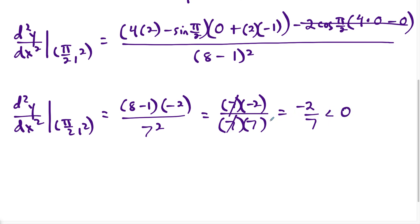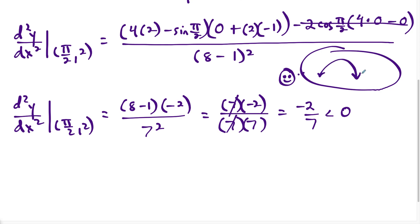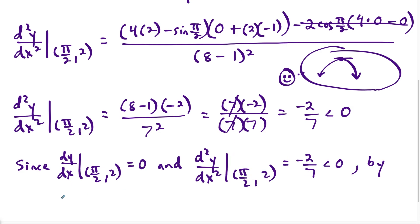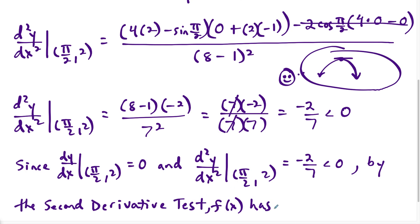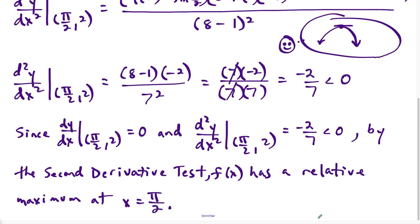Since the second derivative is negative two over seven, which is less than zero, the curve is concave down at this point. When you have a critical point where the curve is concave down, it's a relative maximum. So by the second derivative test, pi over two comma two is a relative maximum. This concludes the video on the 2021 AP Calculus AB free response question number five. If this video was helpful, please like and subscribe, leave topic requests in the comments below, and thanks for watching.